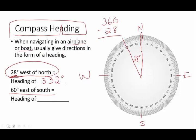Try this one. 60 degrees east of south. 60 degrees east of south. So here's my south. 10, 20, 30, 40, 50, 60. 60 degrees east of south is going to be a heading of 120 degrees.